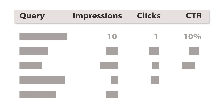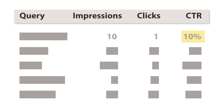Try comparing your site's impressions to its clicks. If your site is being displayed 10 times for a query, but is clicked onto only once, this might indicate that your site doesn't look that appealing in the search results, and it's time to edit your titles or content.